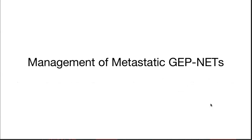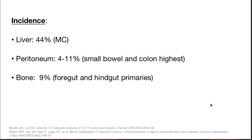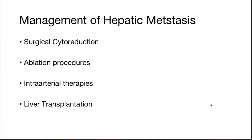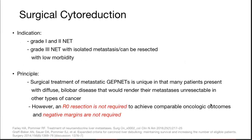Now, management of metastatic gastroenteropancreatic tumors as a whole — the most common site of metastasis is liver at around 44%, followed by peritoneum and bone. For management of hepatic metastasis, there are four options: surgical cytoreduction, ablation procedures, intra-arterial therapies, and liver transplantation. The indication for surgical cytoreduction is well-differentiated tumors (grade 1 and 2) or grade 3 with only isolated metastasis in patients with low morbidity.